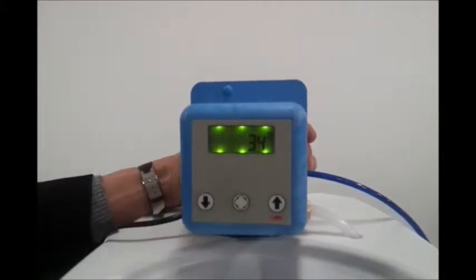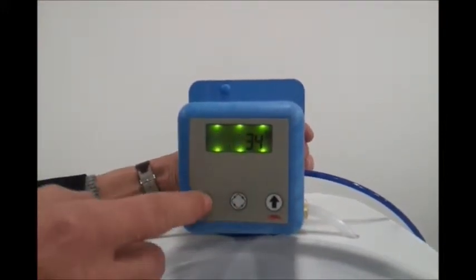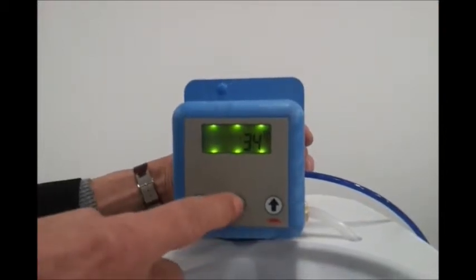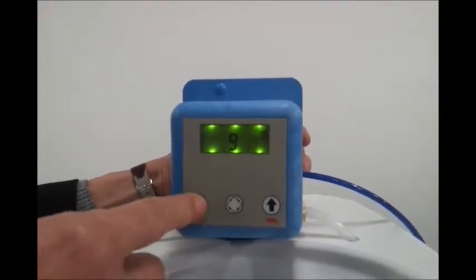Set current time. To modify hours, use the arrow buttons up and down. To modify minutes, use arrow buttons up and down.